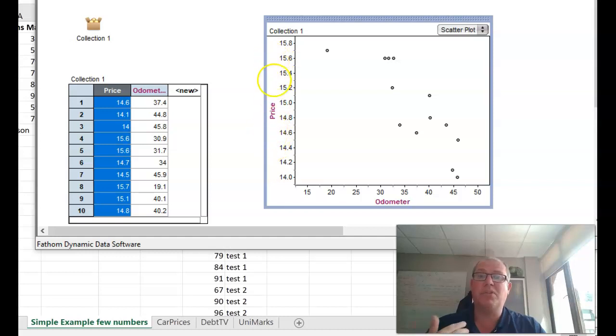The thing that goes on the horizontal is what's predicting and this is actually responding to that. In science they call this the independent variable and the vertical one the dependent variable. In statistics we call them the explanatory variable because the mileage explains the price and the price responds to the mileage, so we call the price the response variable.